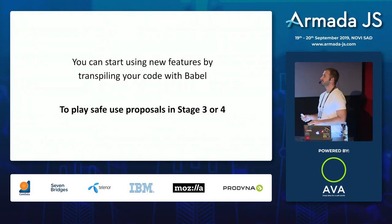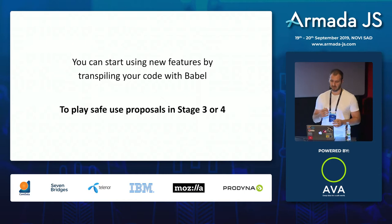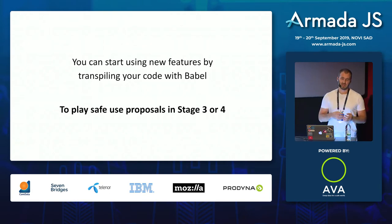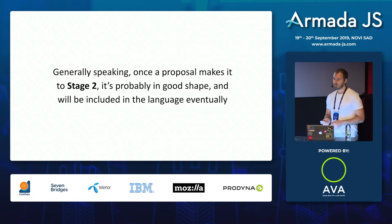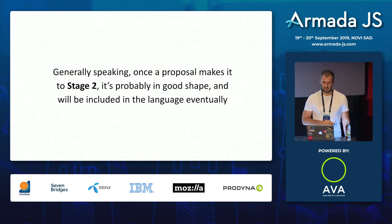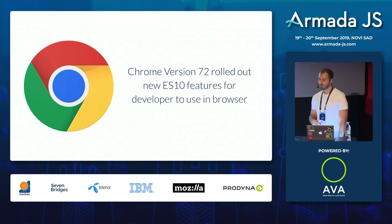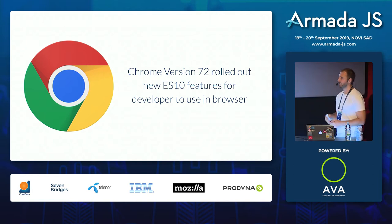You can start using new ECMAScript features from stage two when they get a Babel plugin for transpilation, but to play safe you should use proposals in stage three or four. In stage three or four the API is finalized; in stage two the API can still change because it's still a draft. Regarding Chrome and new features, you can use them natively without any plugin from version 72. Chrome is evolving really fast and adding new features all the time.